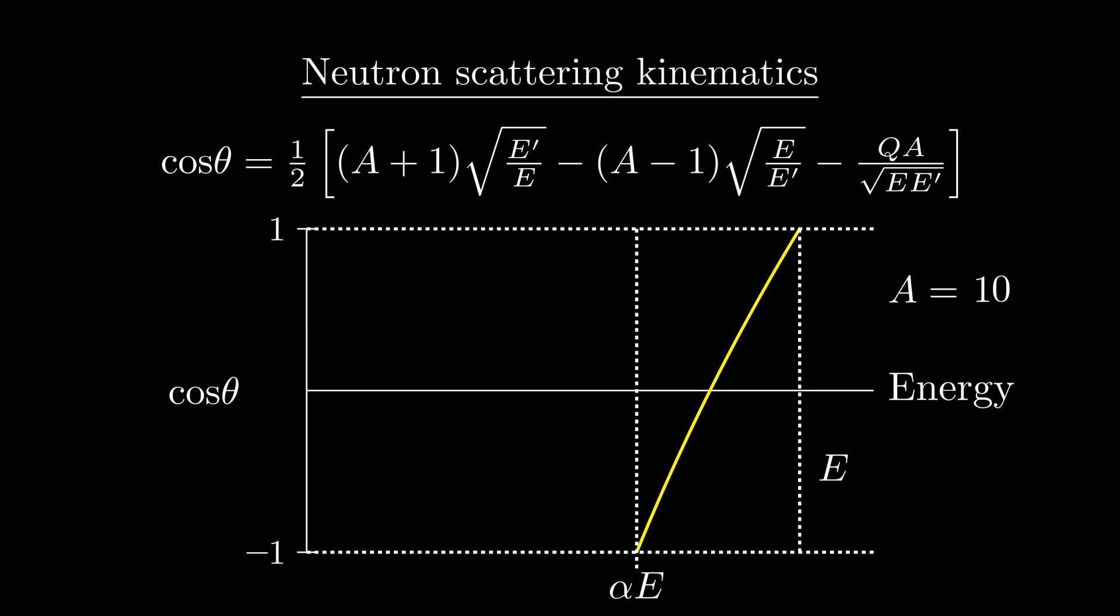If the mass of the target was infinite, this curve becomes a straight line up and down at E. This is analogous to the neutron scattering off of some immovable point. No matter what angle it bounces away with, it's going to transfer no energy at all.